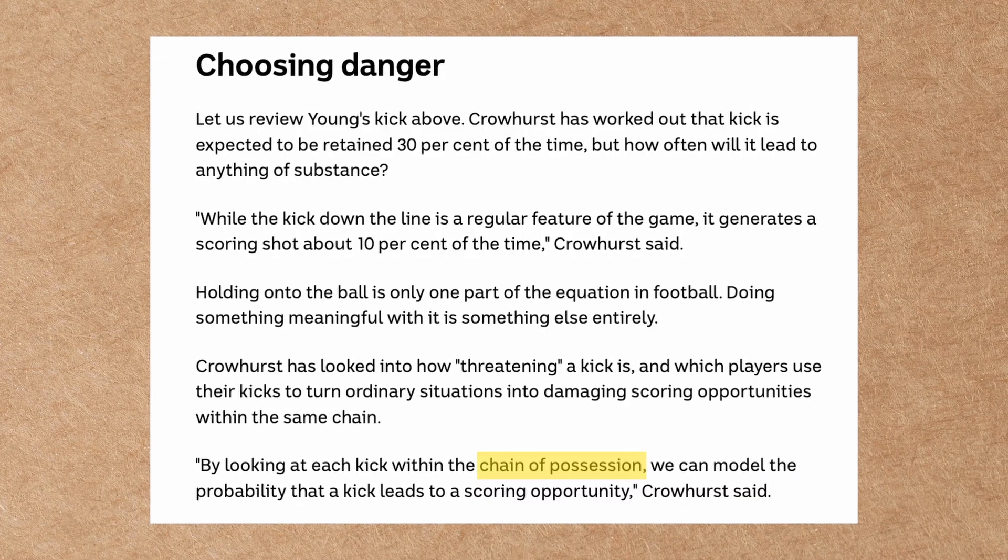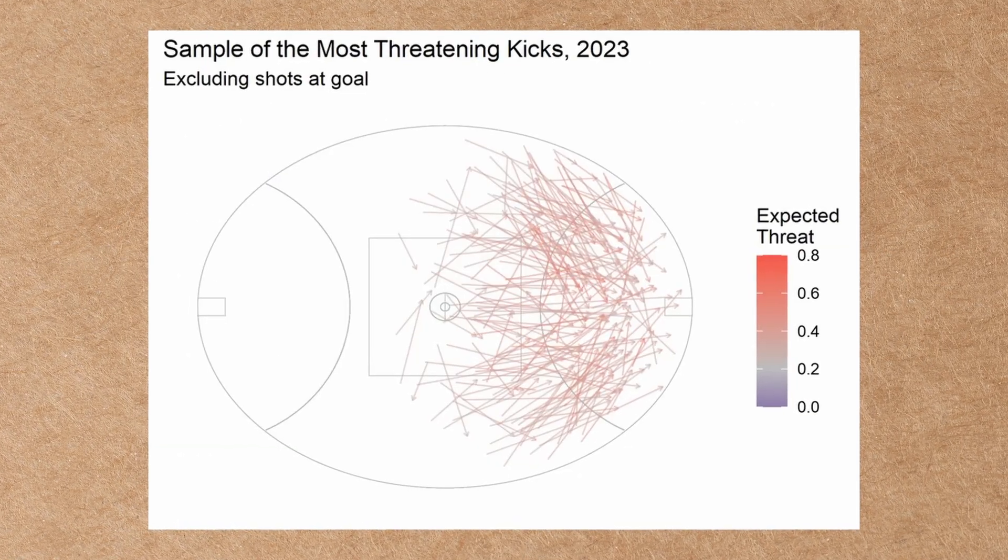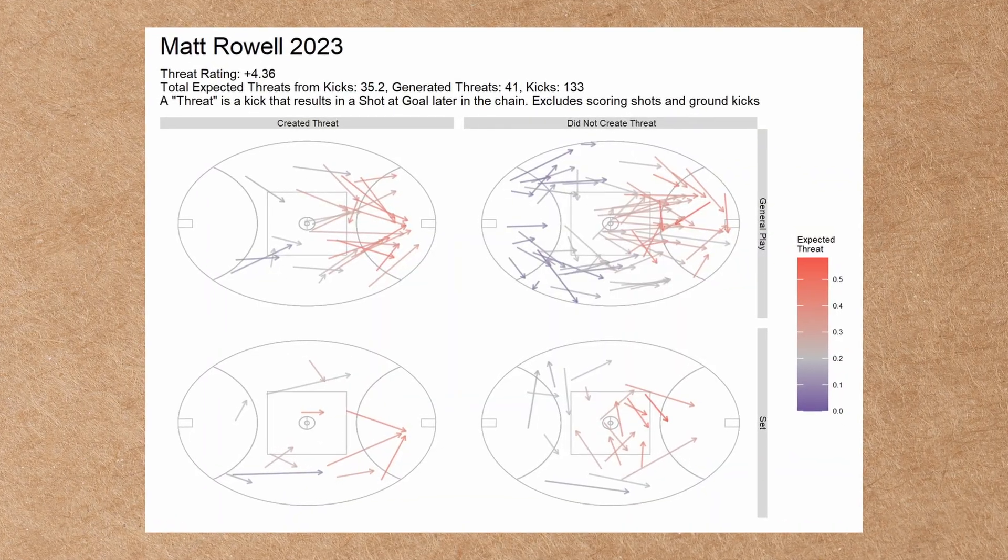And by doing this, I looked at the outcomes of kicks using this data set called the chain data set. And you can see every single kick, you can have its location, its implied pressure, how far they kicked it and at what angle. And from there, you can determine the average rate of retention for every single kick over the last five years. And you can compare players to see how well they do against the AFL average. And then threat is another one. How likely is this kick to generate a scoring opportunity later down the chain? So, the two kind of ideas, retention and then threat as kind of like two advanced metrics.